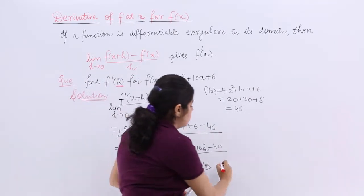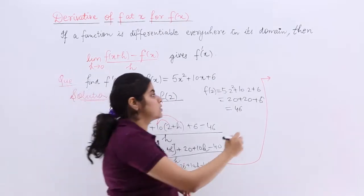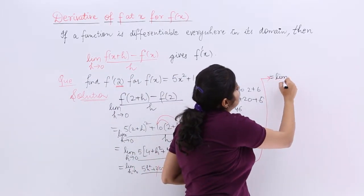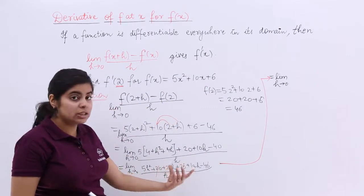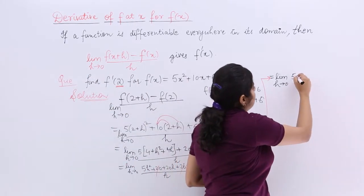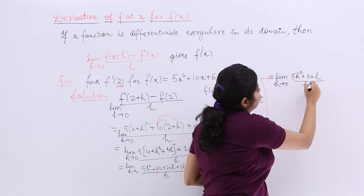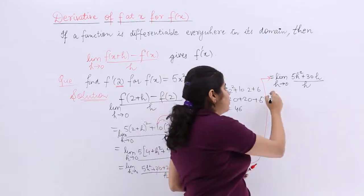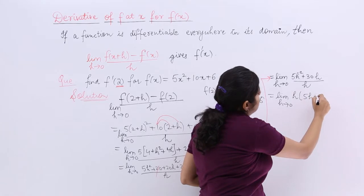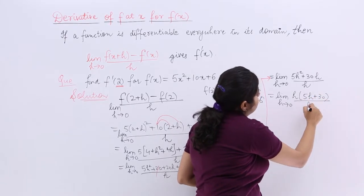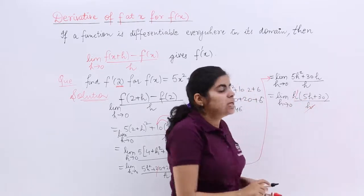Now let us shift the rest of the solution here. So it becomes what? Limit h tends to 0. I am copying it. You also see whether the copying is done correctly. Then 5h square plus 30h upon h. Certain things can come out common. Limit h tends to 0, h is common: 5h plus 30 upon h. h and h get cancelled.